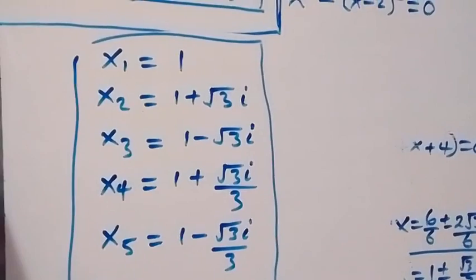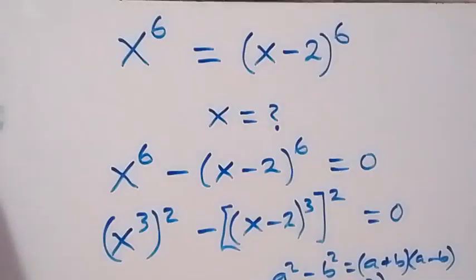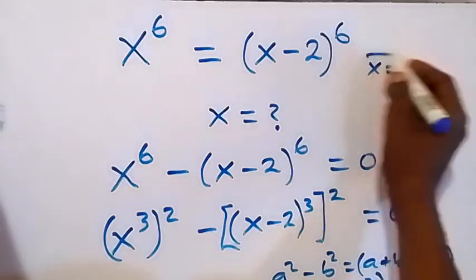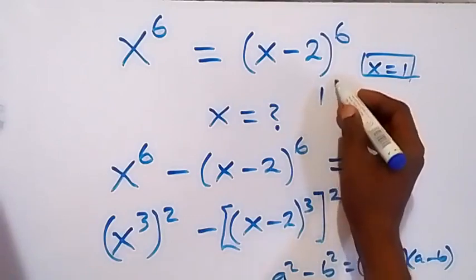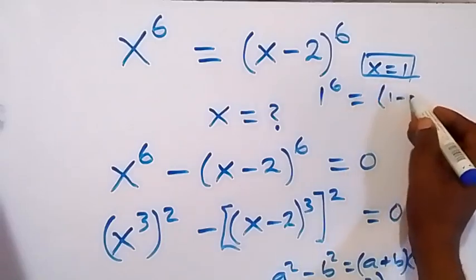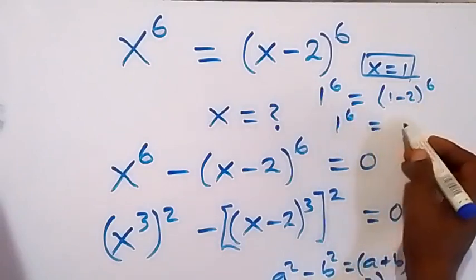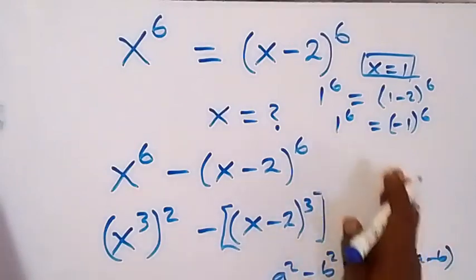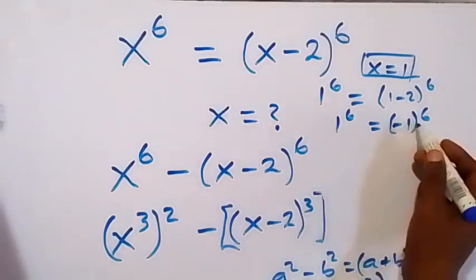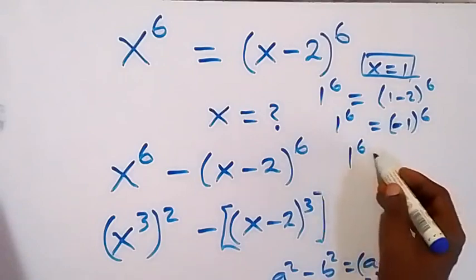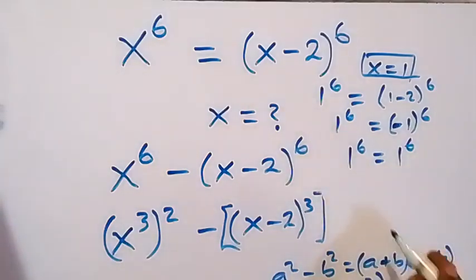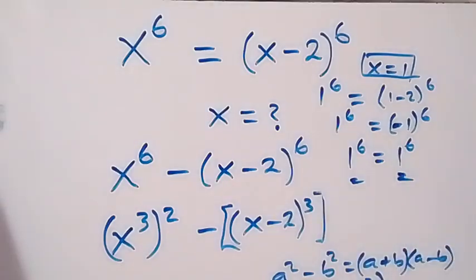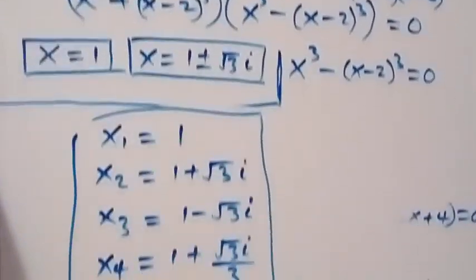We can verify: for x equals 1, the original equation x⁶ equals (x minus 2)⁶ becomes 1⁶ equals (1 minus 2)⁶, which is 1⁶ equals (−1)⁶. Since raising a negative number to an even power gives a positive result, (−1)⁶ equals 1. So the left-hand side equals the right-hand side, and x equals 1 satisfies the equation. All other complex solutions similarly satisfy it.